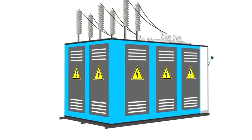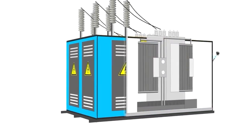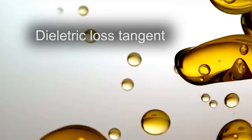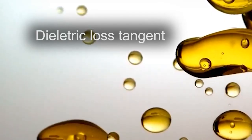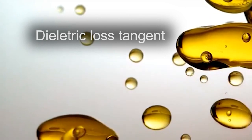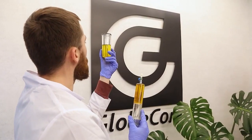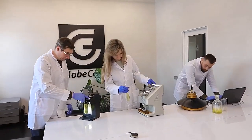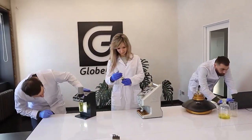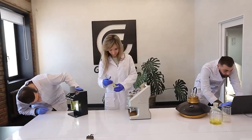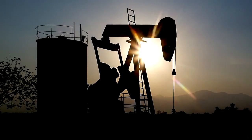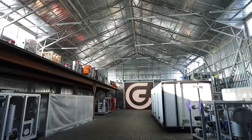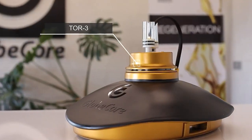To obtain complete information about the dielectric properties of transformer oil, the dielectric loss tangent is measured. In the case of new oils, this parameter makes it possible to assess the quality and degree of their purification, and in the case of used oils, the degree of their contamination and aging is estimated. Therefore, devices for measuring the dielectric loss tangent should be available in every laboratory, not only of power distribution companies, but also of companies that produce transformer oils.